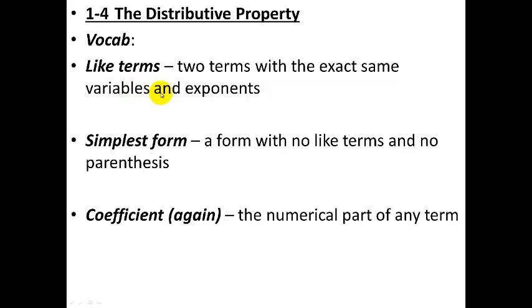Like terms. These are going to be two or more terms with the exact same variables and exponents. So they could be, for example, 3x, 5x, and negative 6x. These are like terms because they can be combined, because they have the same variables and the same exponents. They all have an x, and more importantly, they all have an x to the first power.